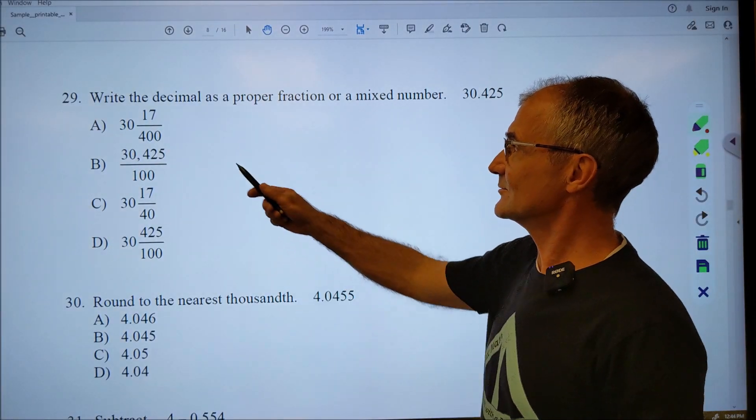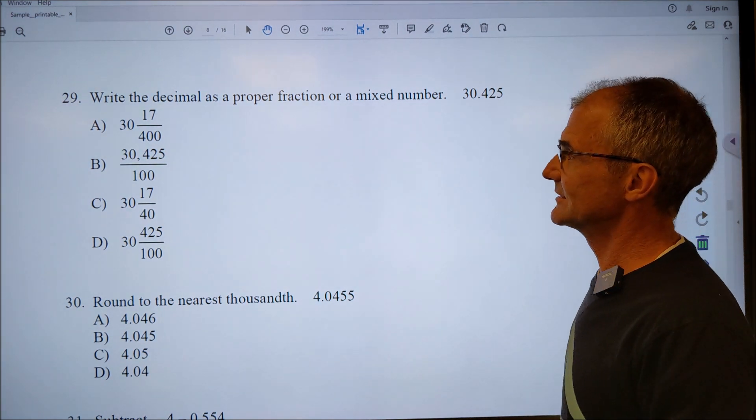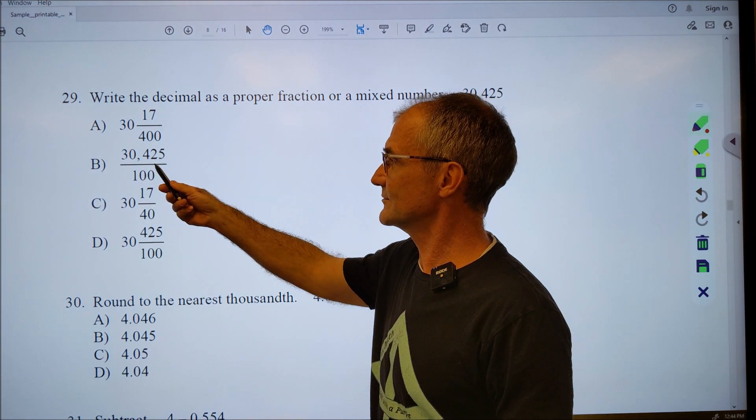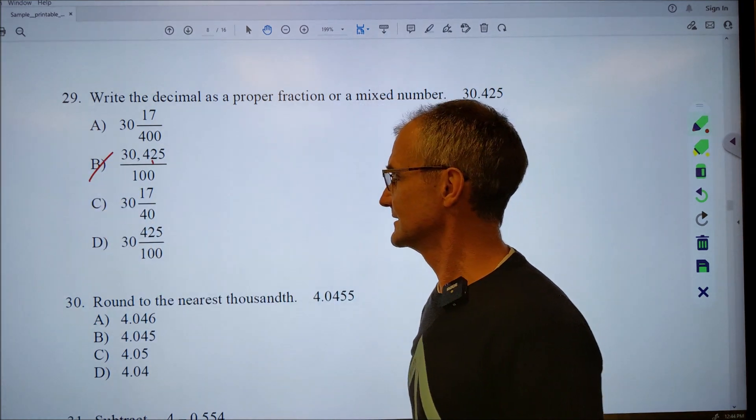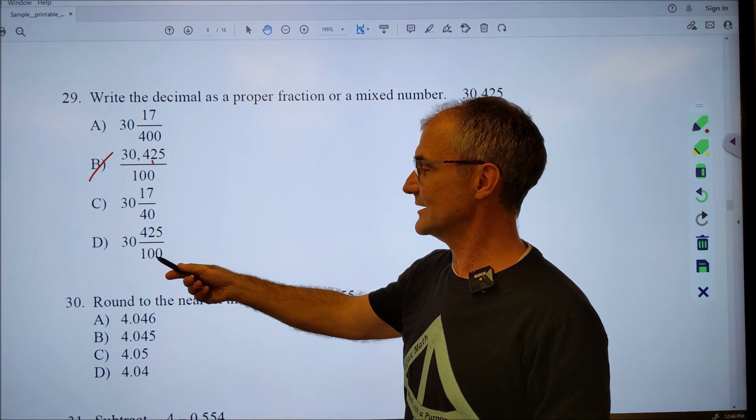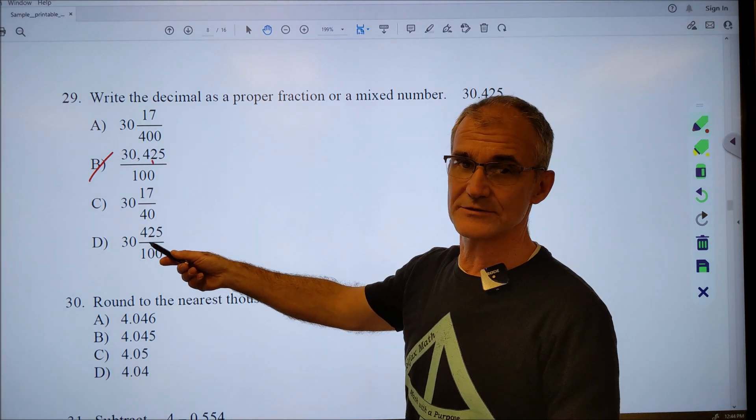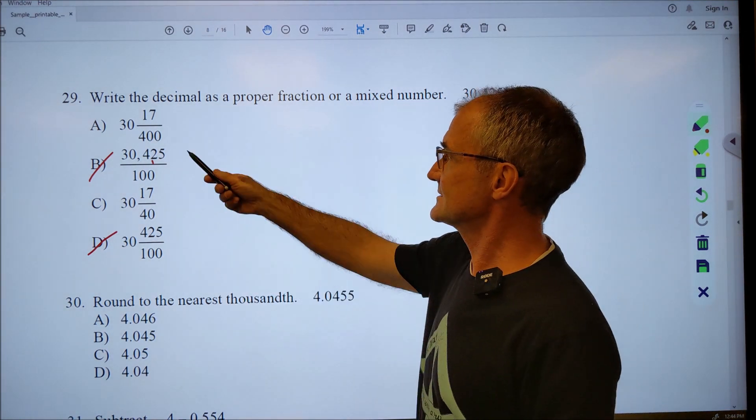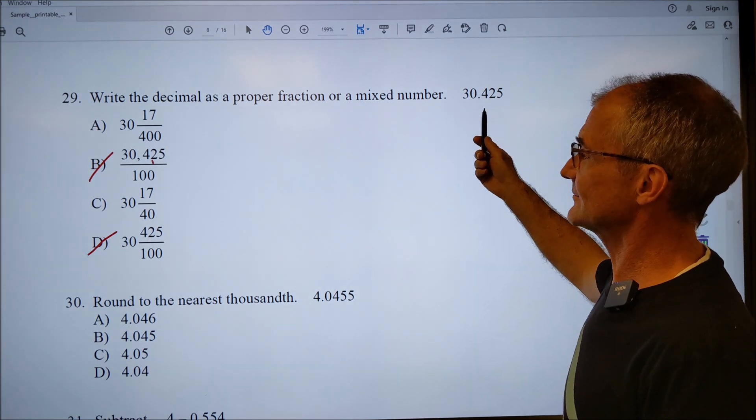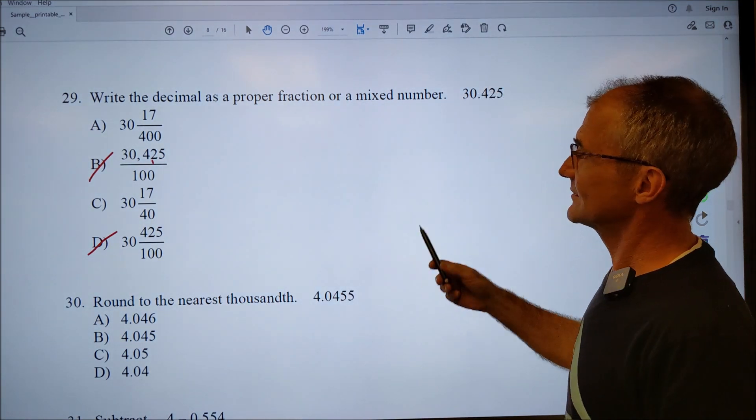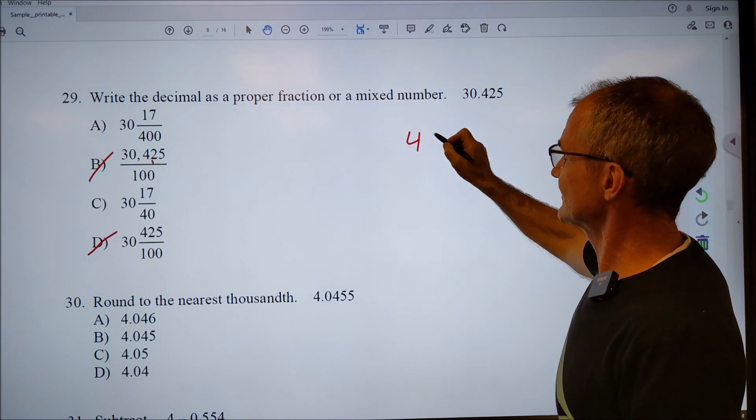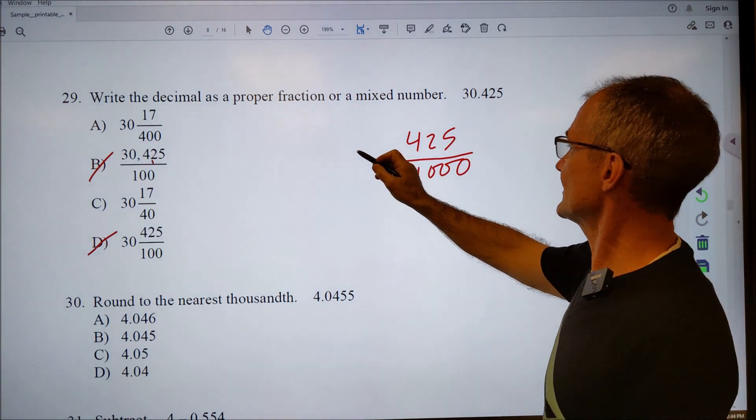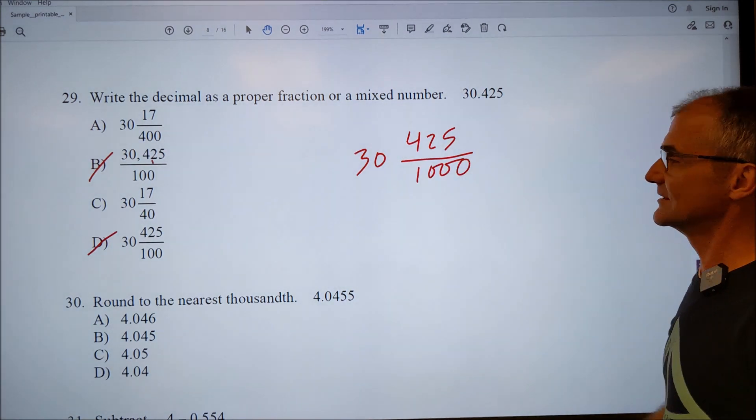Okay, number 29. Write the decimal as a proper fraction or a mixed number. They're all thirties except for this one. This number right here divided by a hundred, I'd move the decimal over two places to get 304. That doesn't make sense. This one right here, 425 divided by a hundred is, you know, four. It's a whole unit. So that would be like 34. So that doesn't make sense. 17 four hundredths, it could be that one or 17 fortieths. Well, this is 425 one thousandths, right? That's what that point four two five is. So I have thirty and 425 one thousandths.